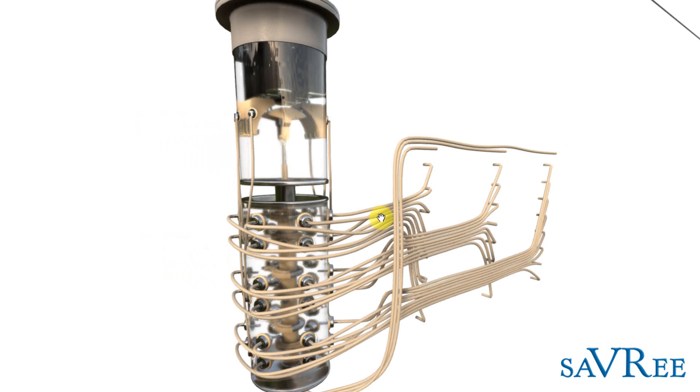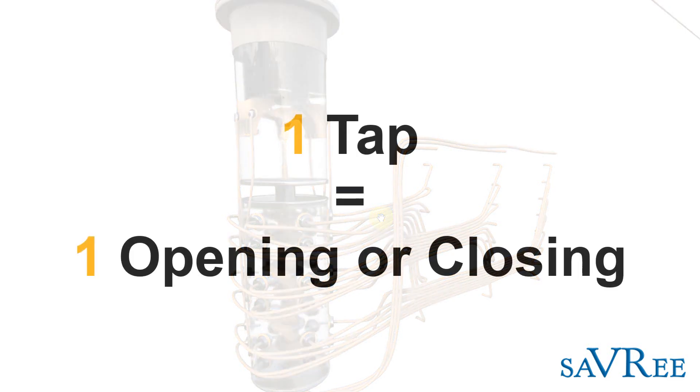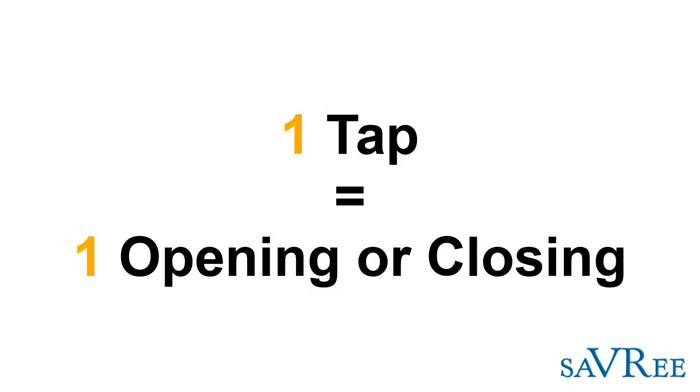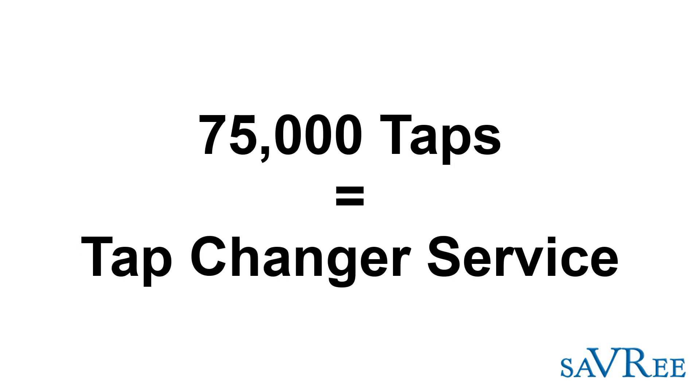Typically, when you're looking at a tap changer, the thing that you need to pay attention to is the number of taps. The number of taps are typically used to indicate when the unit should be maintained. And a typical number like 70,000 taps would indicate that it's time to take the tap changer out and service it.